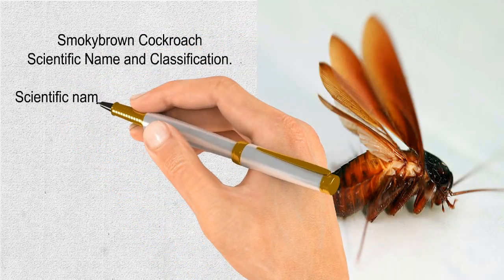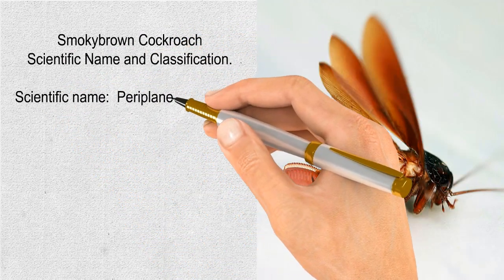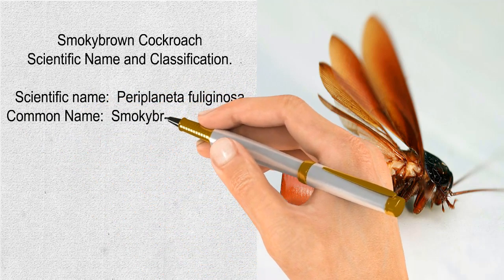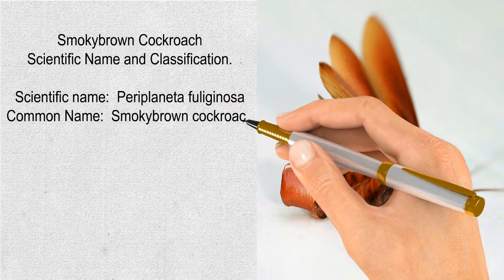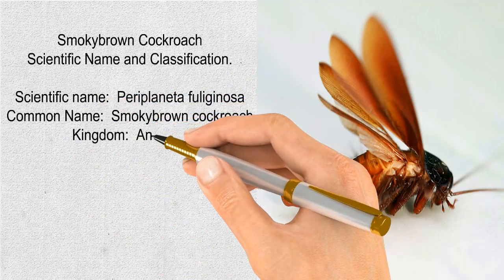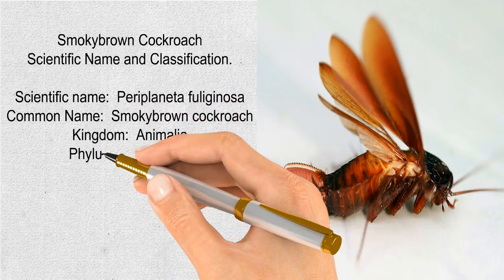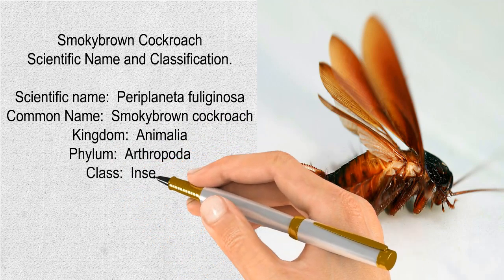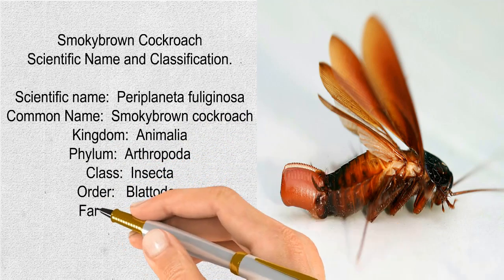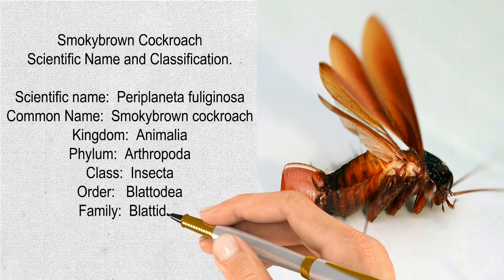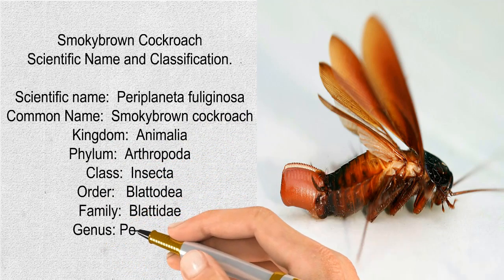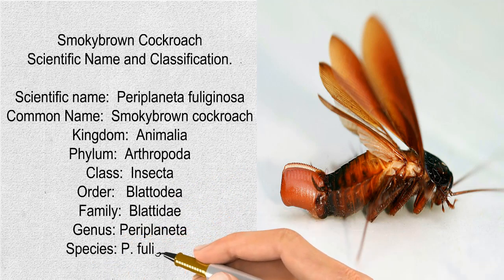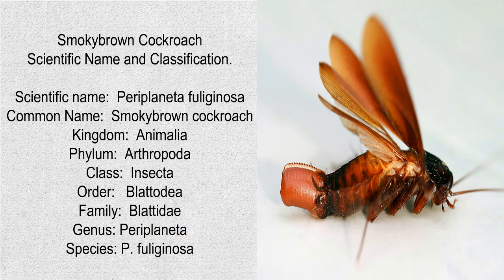Smokybrown cockroach scientific name and classification: scientific name Periplaneta fuliginosa, common name smokybrown cockroach, kingdom Animalia, phylum Arthropoda, class Insecta, order Blattodea, family Blattidae, genus Periplaneta, species Periplaneta fuliginosa.